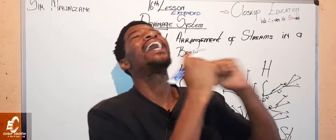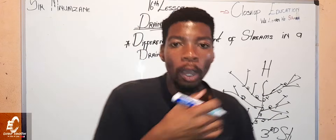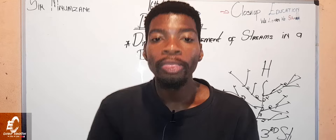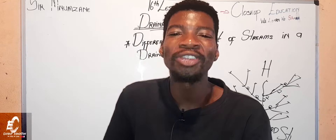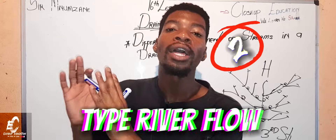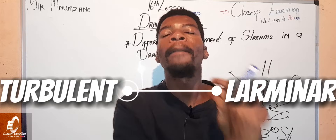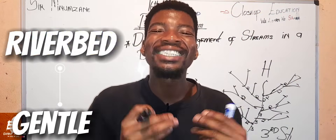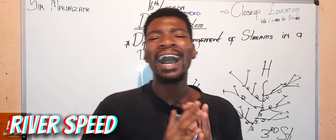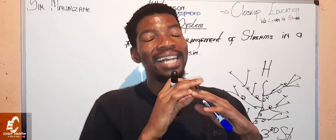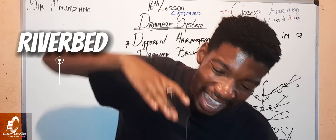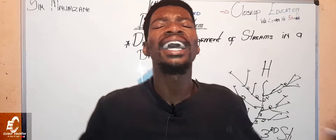We've reached the last subtopic: river discharge. River discharge means the flow of the river according to the gradient of the slope. There are two types: turbulent flow and laminar flow. Laminar flow means the riverbed is flat and gentle, water moves at low speed, and there are fewer rock obstacles. Turbulent flow means the slope is very steep, water moves at high speed, and there are rocks causing disturbance.